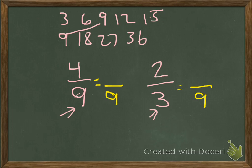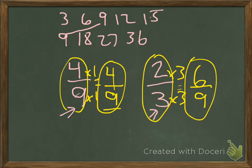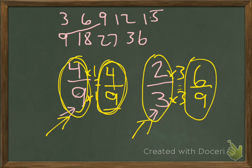Since we're using 9 as the common denominator, we figure out the equivalent fraction for each. For four-ninths equaling blank over 9: since 9 times 1 equals 9, we multiply the numerator by 1, giving us four-ninths — it stays the same. For two-thirds: 3 times 3 equals 9, so we multiply the numerator by 3, giving us six-ninths. Therefore, two-thirds equals six-ninths, and four-ninths equals four-ninths. We used the common denominator 9 to make equivalent fractions.